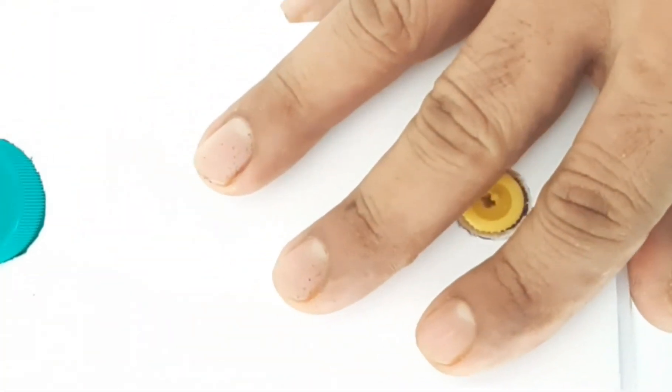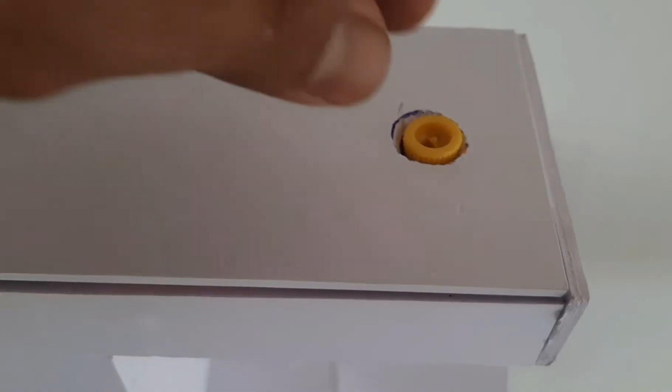Now we will close the top side. You can see here we give an opening to adjust the valve. Adjust the valve to control the flow of liquid.